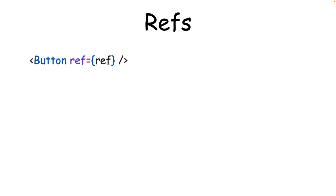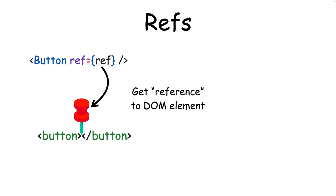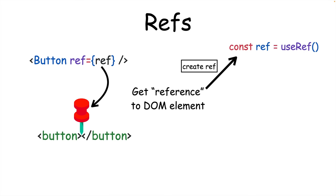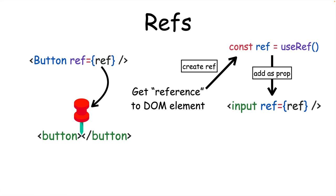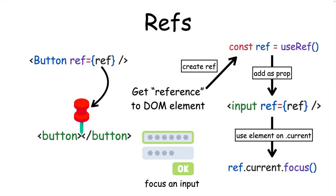Sometimes you want to step outside React and work directly with the DOM. To reference an actual DOM element, you can use what's called a ref. You can create a ref with the useRef hook, and to get access to a DOM element, use the ref prop on any React element. For some tasks such as focusing an input, it's much easier to reference the actual DOM element instead of attempting to do it the React way.